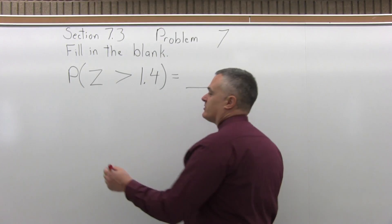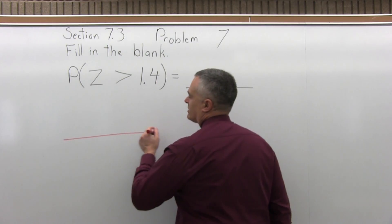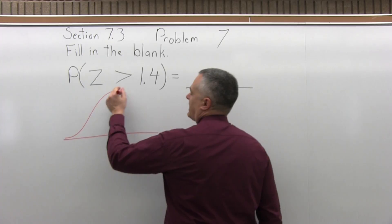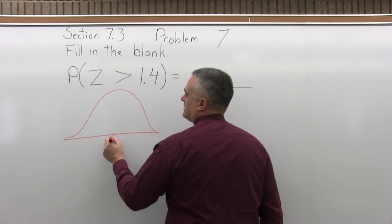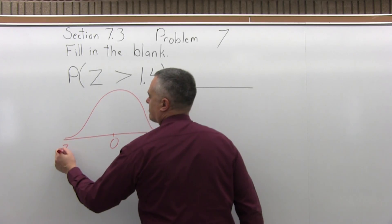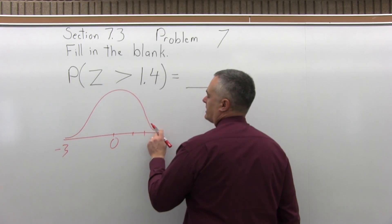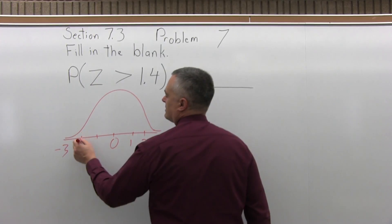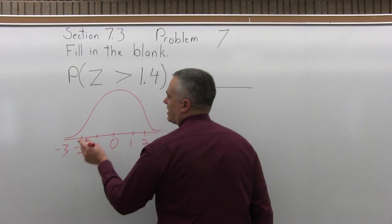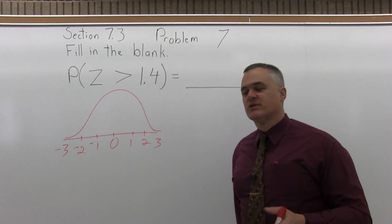So first of all, let's see what we're trying to solve. You don't have to draw the graph for one of these pictures, but I feel that it helps. So we'll set up our bell curve, and the numbers underneath are how many standard deviations away from the average value are.